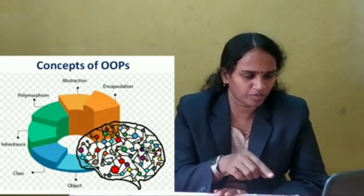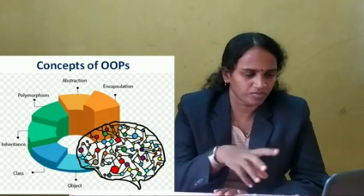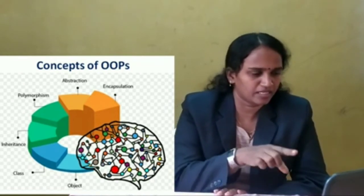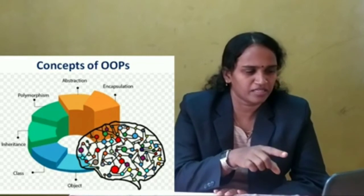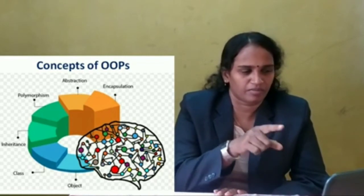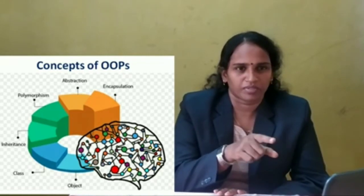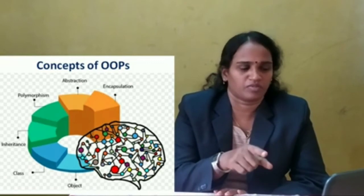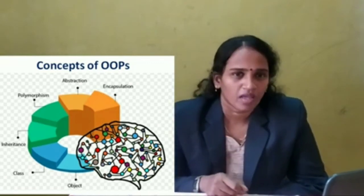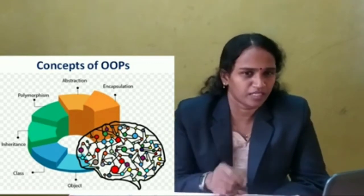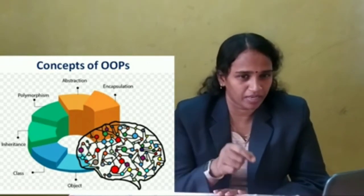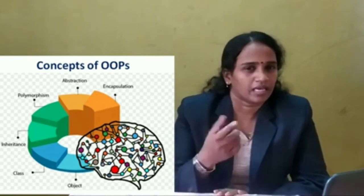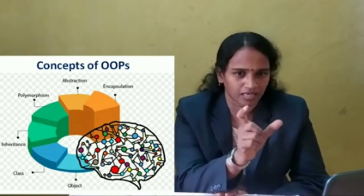For object, it may be circle one, circle two, circle three. For class, it is circle. These are examples of objects and their class.